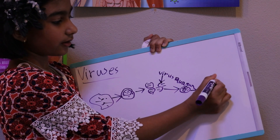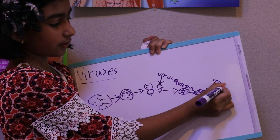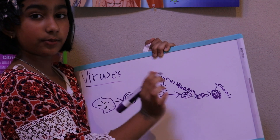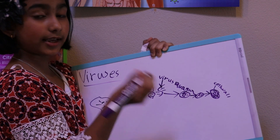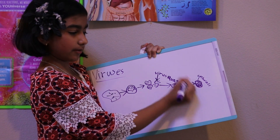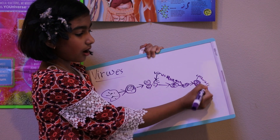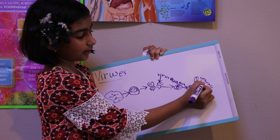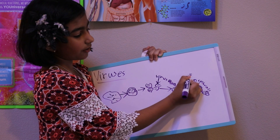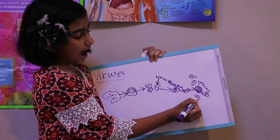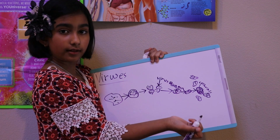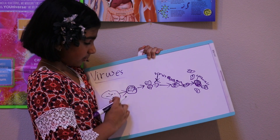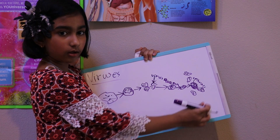This outer part is the cell wall. A cell cannot live without a cell wall, so if the cell wall breaks, it cannot live. What the virus does is break the cell wall and all the viruses escape — the cell wall is broken and the cell is dead. These are all the viruses escaping, and then they attach to new cells in your body, making the cycle repeat all over again.